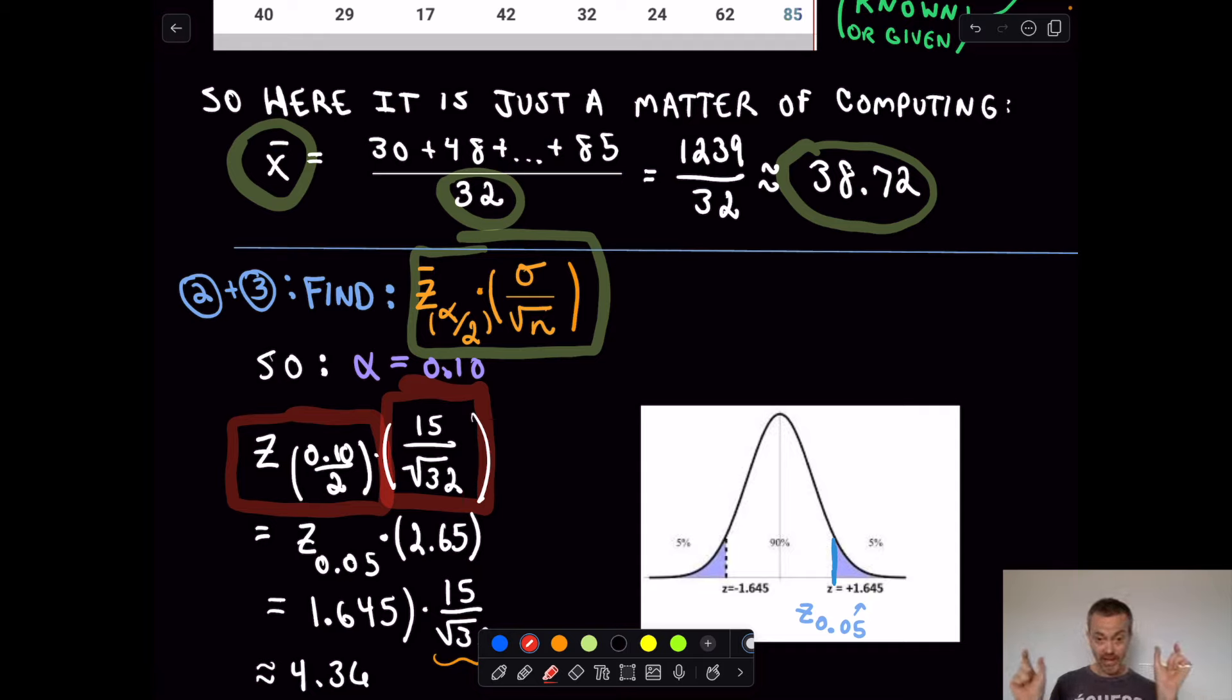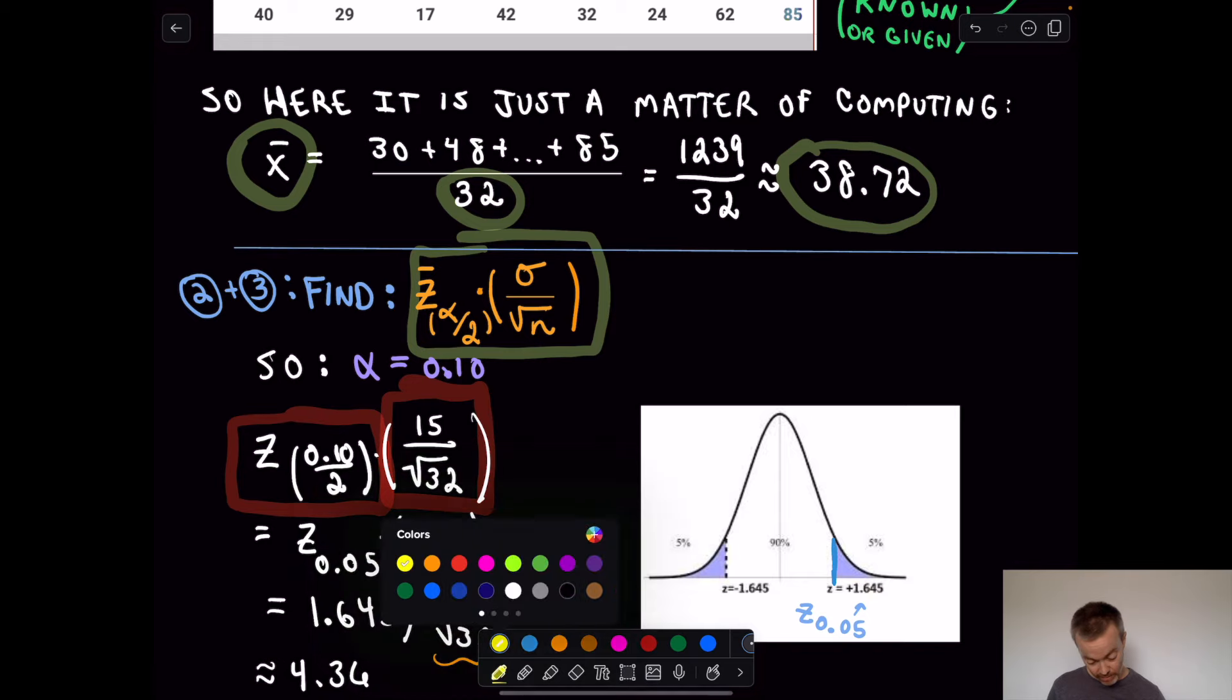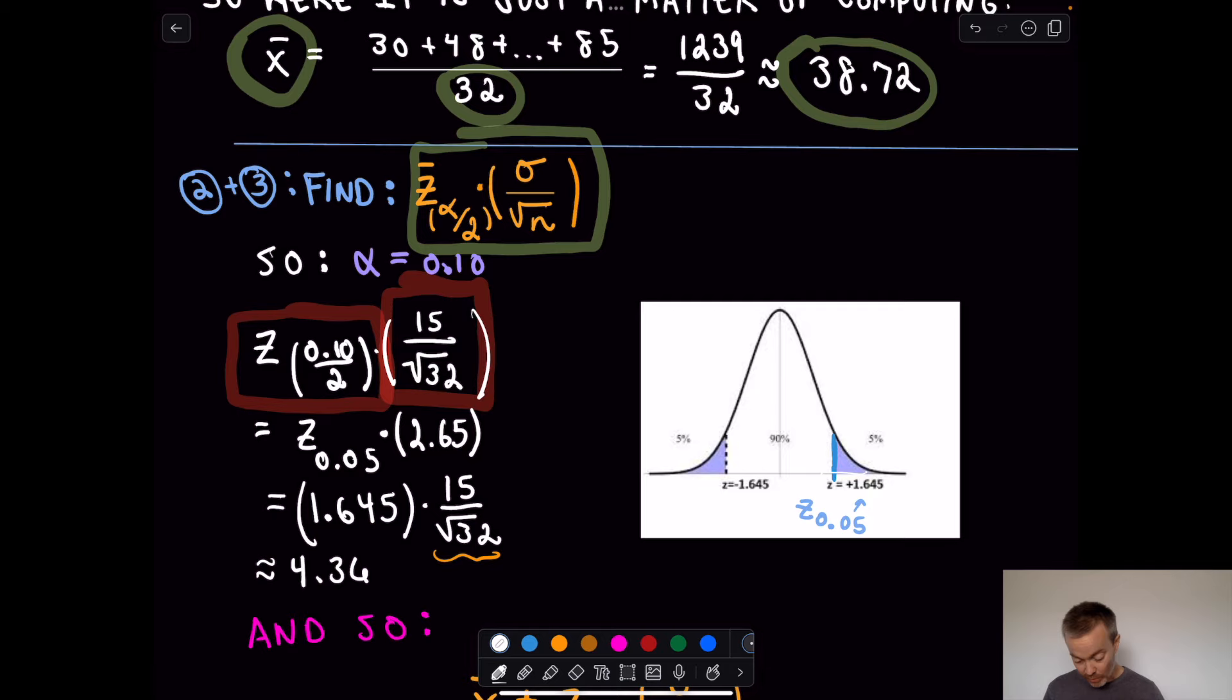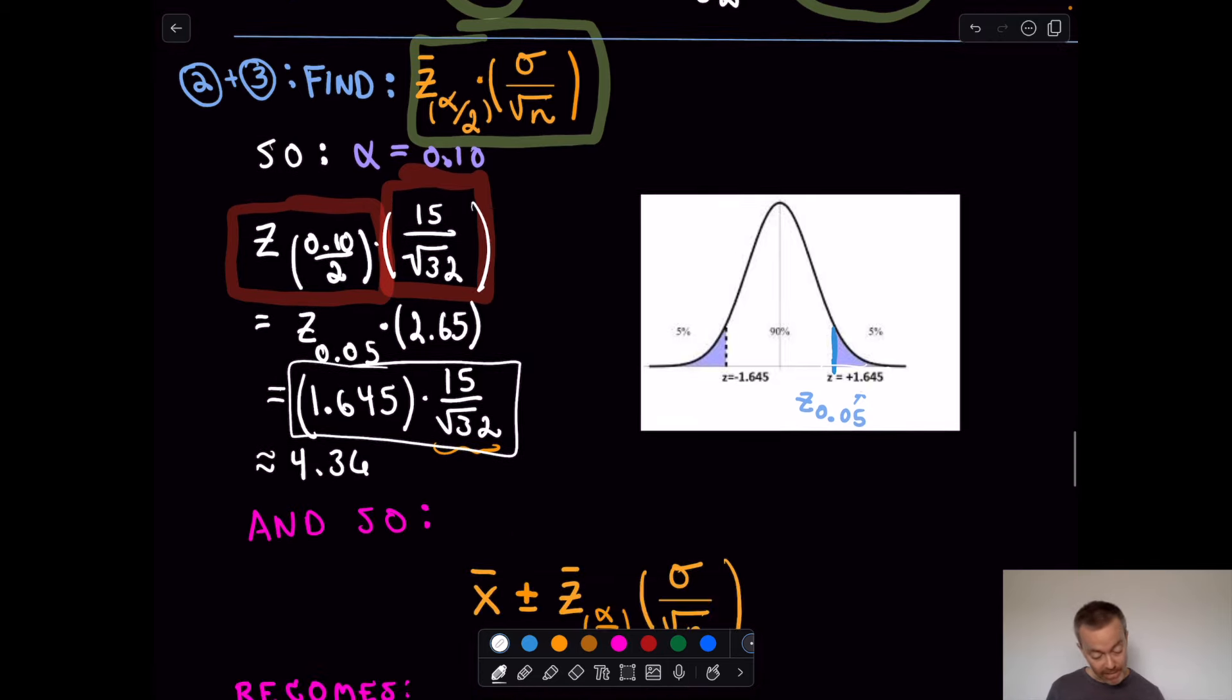So again, if we want 5% on either end, this is just, again, referring to a table often at the back of the book. It says the z value that goes with that. It says once you get to 1.645, once you get past that, only 5% of the data is going to be left. So I take 1.645, multiply it by my standard deviation, divided by the square root of n. I got this to be equal to 4.36.